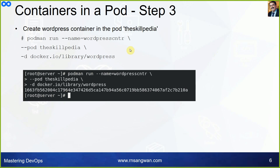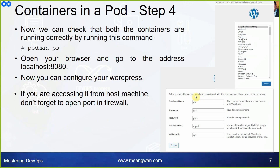Now create the WordPress container in the same pod: `podman run --name wordpress-container --pod the-skillpedia -d` with the WordPress image name. Now we have WordPress also running in the same pod. You can check that both containers are running using the `podman ps` command.